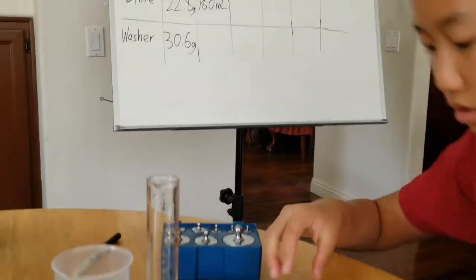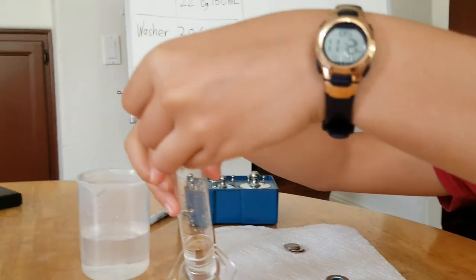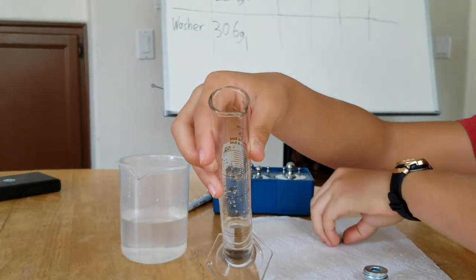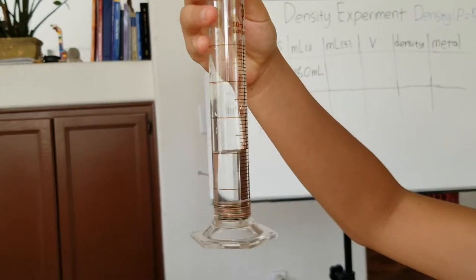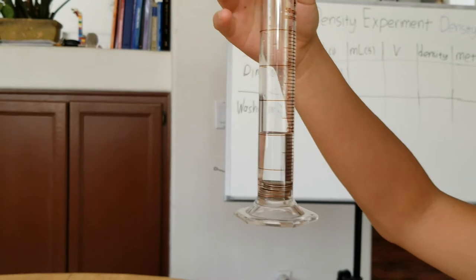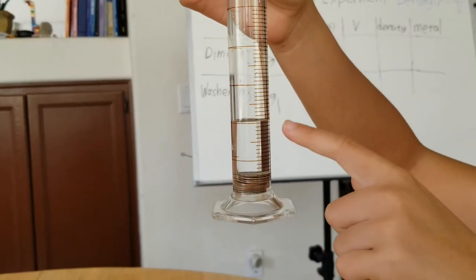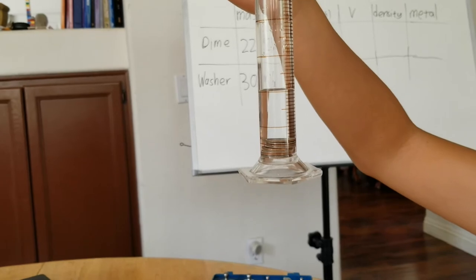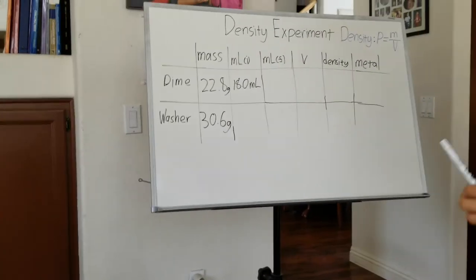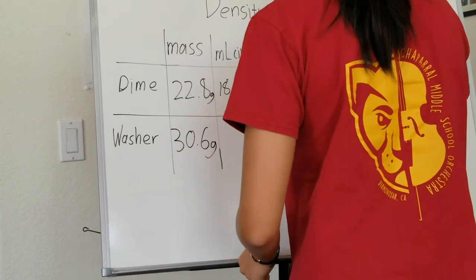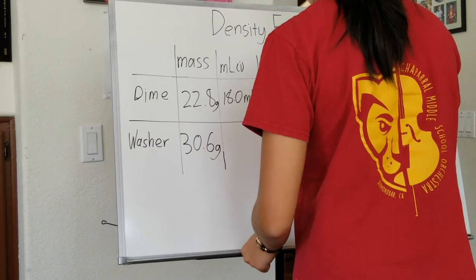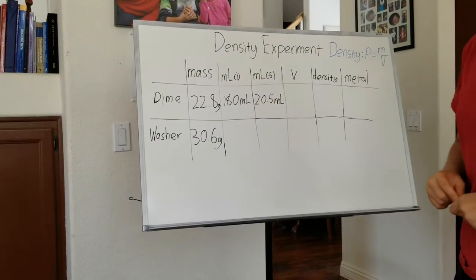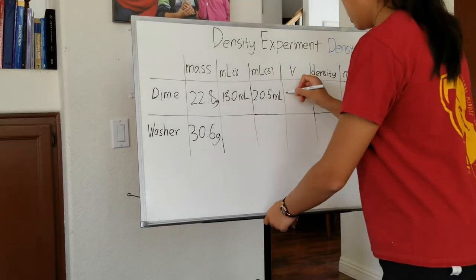So our initial volume in milliliters would be 18.0 milliliters. The I stands for initial, the F stands for final because to find the volume in the end, you're going to need to subtract the initial volume from the final volume. Now, take the dimes and you can slide them slowly into the water so that it doesn't make a huge splash. You can twirl it a little once again to get the air bubbles out, and you would look at the curve, the lowest point of the curve. So this is at 20.5. So on here I would write 20.5 milliliters. Now all you need to do is subtract 20.5 minus 18 to get the volume.